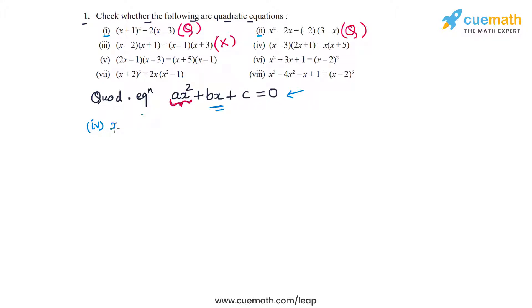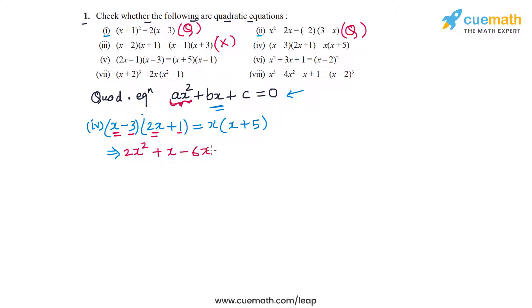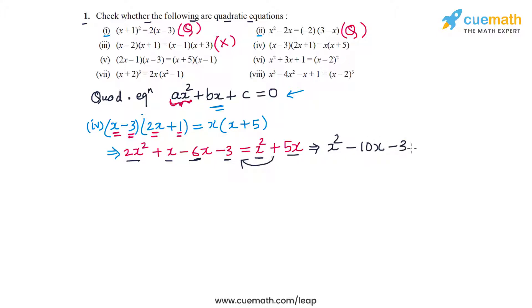In part four, the equation is (x − 3)(2x + 1) = x(x + 5). Expanding the left side: 2x² + x − 6x − 3. On the right side: x² + 5x. Bringing the right hand side terms to the left, we get 2x² − x² = x², then x − 6x − 5x = −10x, and the constant is −3. So the equation becomes x² − 10x − 3 = 0.